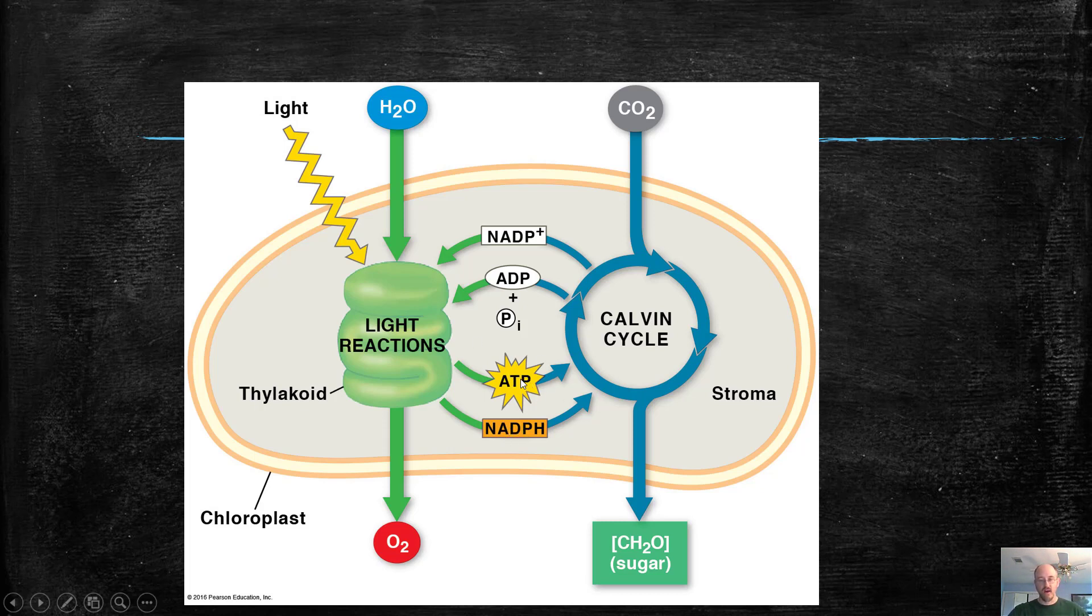ATP is going to be made in this process as well, and then there's going to be another part of this called the Calvin cycle that's going to take carbon dioxide and it's going to make sugar out of it. And these are the steps, the basic roadmap of where we're going in the next part of the lecture.